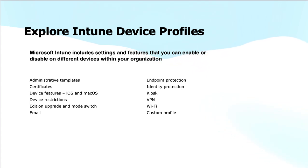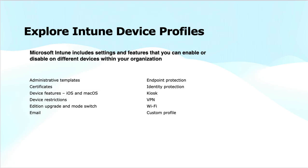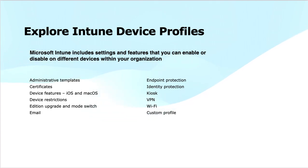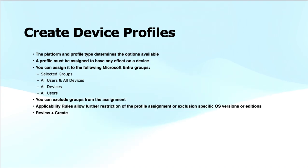Wi-Fi related settings let you configure the Wi-Fi network settings for your devices to automatically and securely connect to corporate networks. We can also define custom profiles — if we have any organization policy requirement, we can create a custom profile through various frameworks available, such as the CSP (Configuration Service Provider) offered by Microsoft. These device profiles with their settings depend on the platform — Android, iOS, or Windows — so the settings will be different, determined by the platform and profile type.